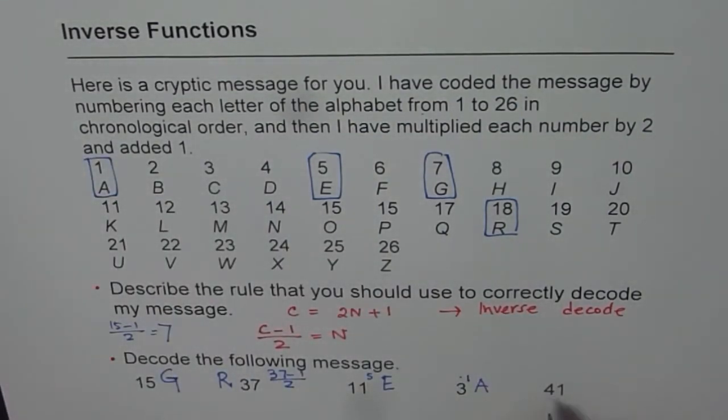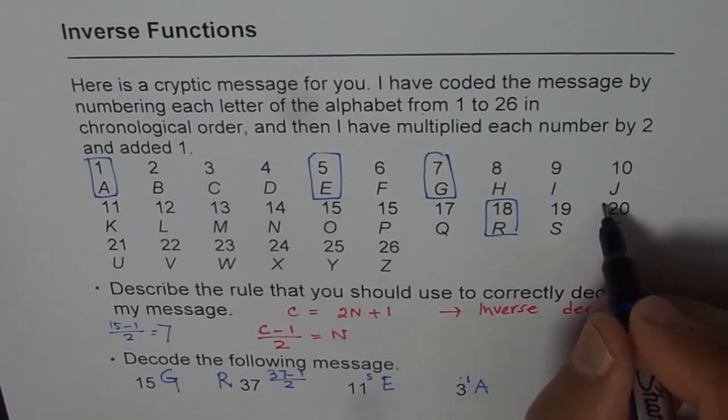41. 1 less than 41 is 40 divided by 2 is 20. 20 is T.